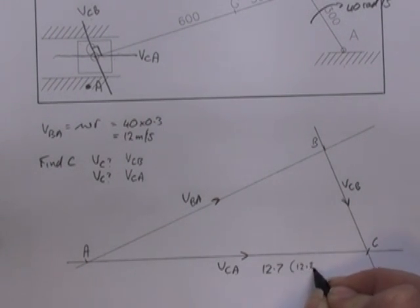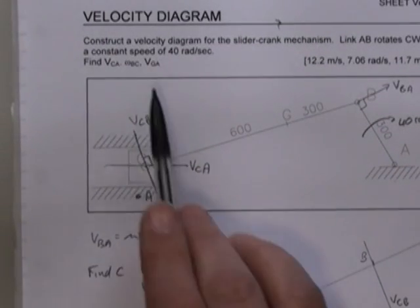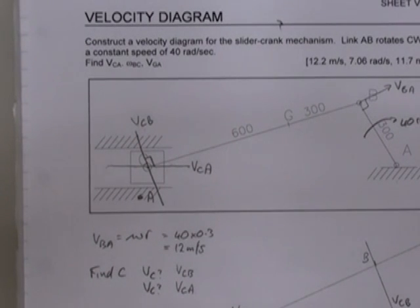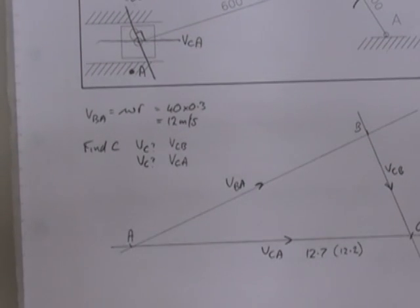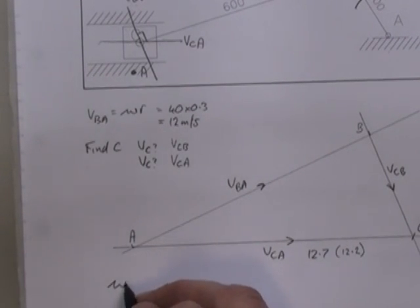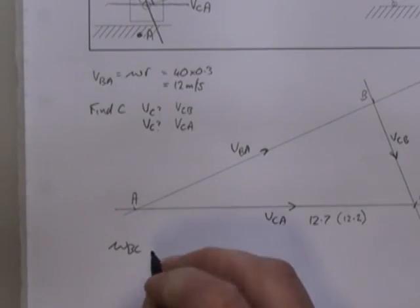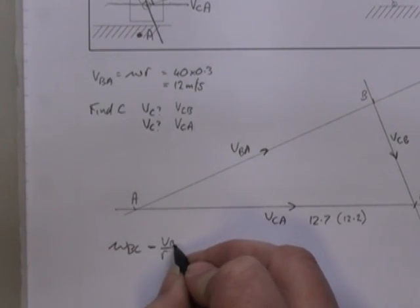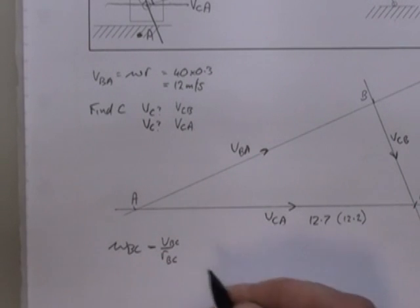We also want to know omega BC, so the rotational speed of BC. So omega BC will be equal to V over R. So it'll be VBC over radius BC.